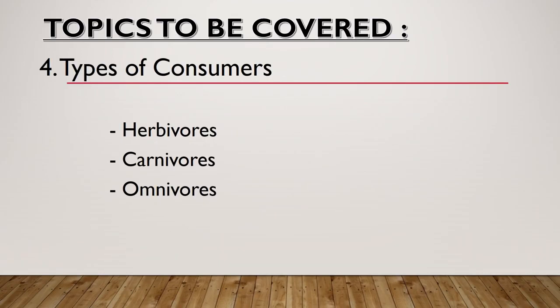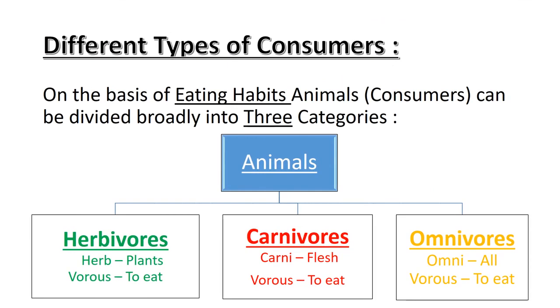Here we will be covering the topic: Types of Consumers — Herbivores, Carnivores, and Omnivores. In this topic, let us learn about different types of consumers. On the basis of eating habits, animals, or specifically consumers, can be divided broadly into three categories.